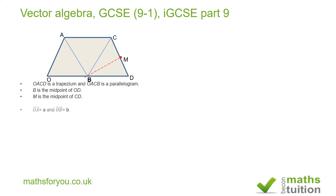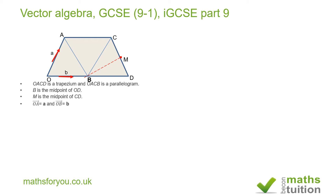Vector OA has a value of a and vector OB has a value of b. Since OACB is a parallelogram, OA is parallel to BC, so BC also has a value of a. AC has a value of b. Because B is the midpoint of CD, the vector from B to D also has a value of b.